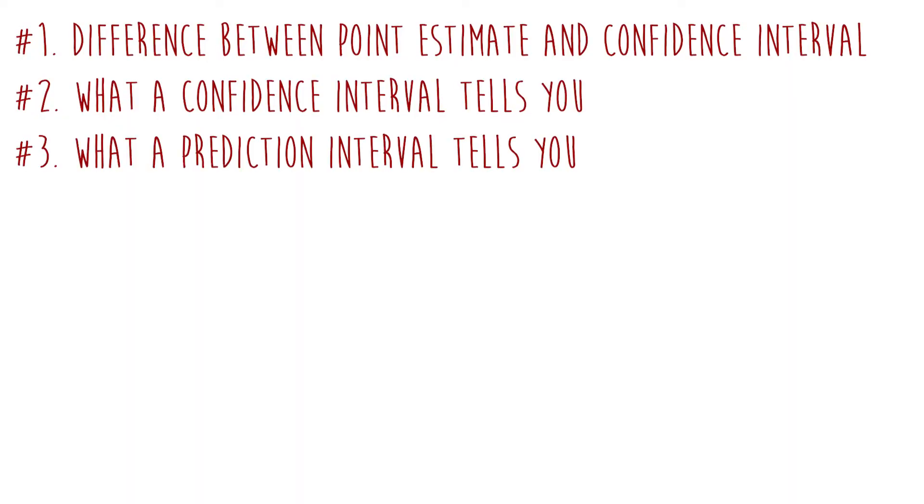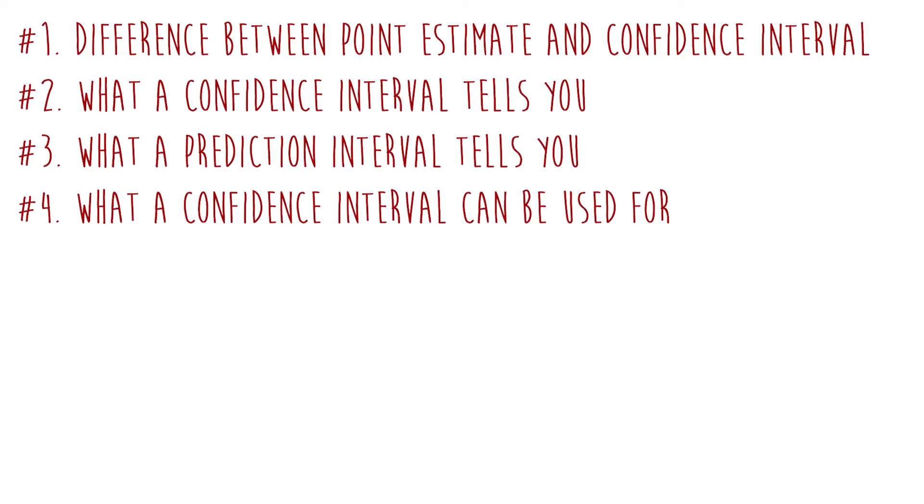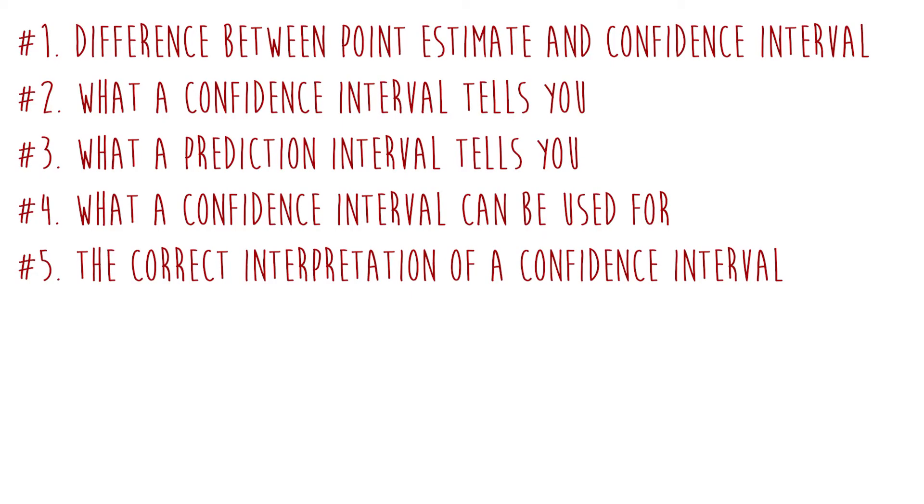Learning objective three: know what a prediction interval tells you — our degree of uncertainty about an individual's predicted score. If we generated predictions for a person over and over on repeated experiments, 95% of the time their true score would fall within that interval. Learning objective four: confidence intervals can be used for all statistics we estimate. Learning objective five: the correct interpretation — if we repeated the experiment under the exact same conditions and sample size an infinite number of times, 95% of the time the interval would contain the true value. And to learn about Bayesian statistics, which is more intuitive, see the link in the description.